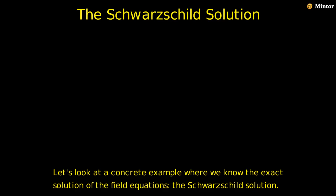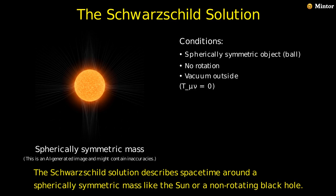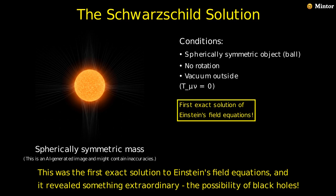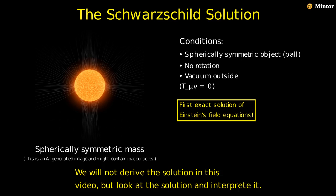Let's look at a concrete example where we know the exact solution of the field equations, the Schwarzschild solution. The Schwarzschild solution describes spacetime around a spherically symmetric mass like the sun or a non-rotating black hole. Karl Schwarzschild found this solution in 1916, just months after Einstein published his field equations, while serving on the Russian front during World War I. This was the first exact solution to Einstein's field equations and it revealed something extraordinary, the possibility of black holes. We will not derive the solution in this video but look at the solution and interpret it.